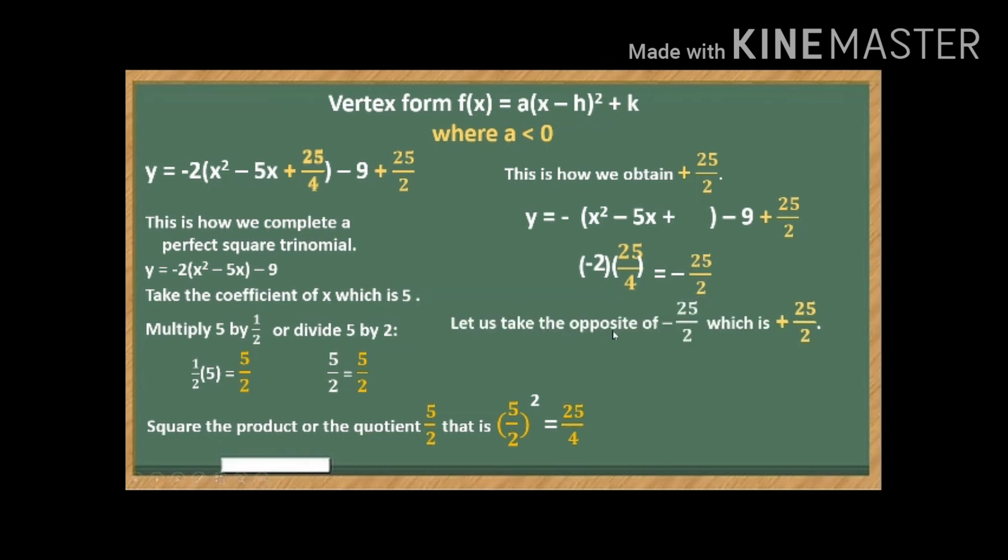So we have here negative 25 over 2. Now, we are only going to take the opposite of negative 25 over 2, which is positive 25 over 2. And that is what we are going to write here. So we added plus, we added positive 25 over 2.